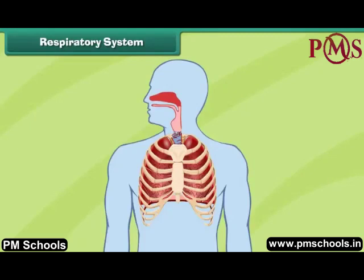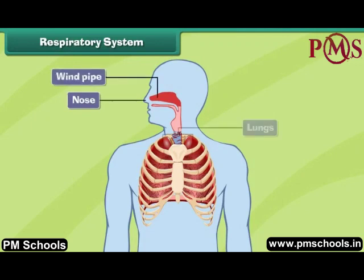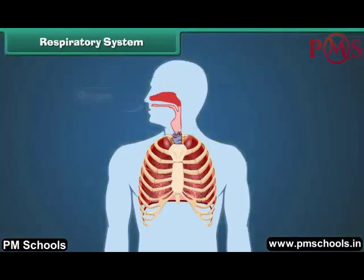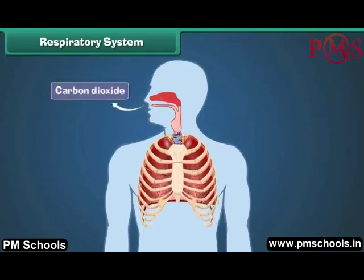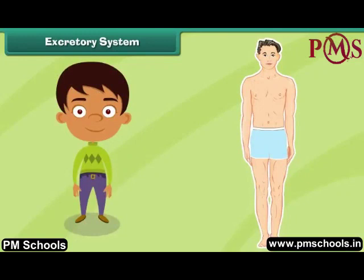The human respiratory system is made up of the nose, windpipe and lungs. It helps in taking oxygen from the air and removing carbon dioxide from the human body. The oxygen mixes with food to give us energy.